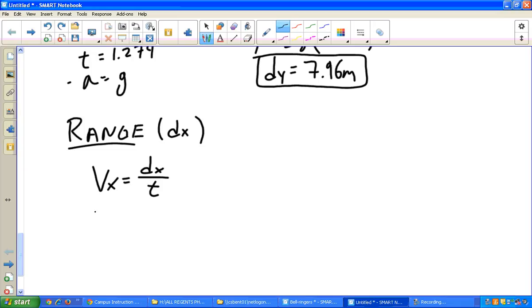So if our velocity was 21.65 meters per second, we'll set that equal to dx. And because the ball is in the air for the entire time, so up and down, we use our total time, 2.55 seconds.